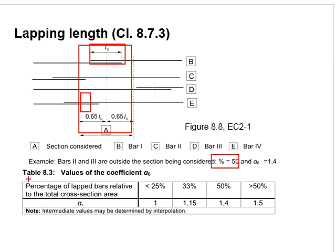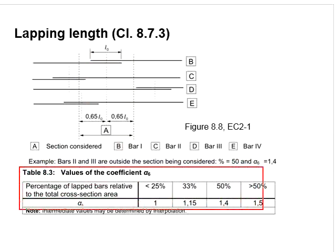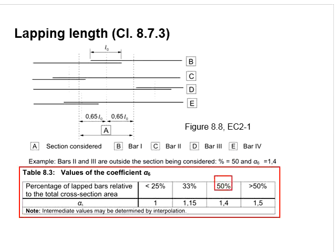With that, referring to table 8.3, we will know that for 50% of the percentage of lapping, alpha 6 will be equal to 1.4.